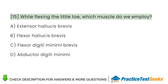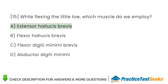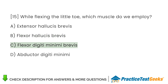While flexing the little toe, which muscle do we employ? A. Extensor hallucis brevis. B. Flexor hallucis brevis. C. Flexor digiti minimi brevis. D. Abductor digiti minimi.